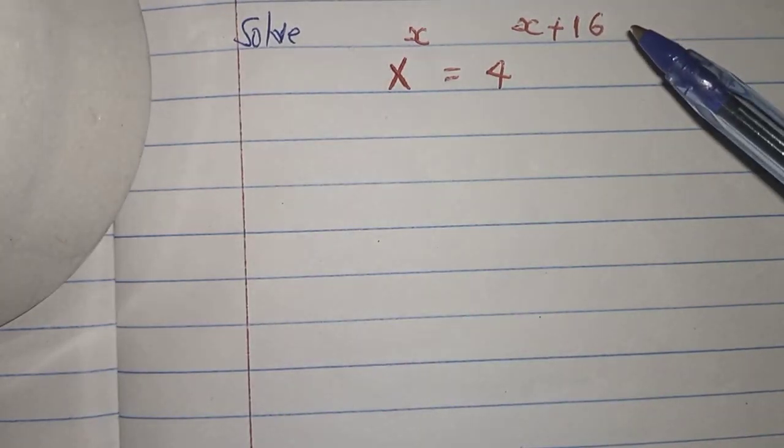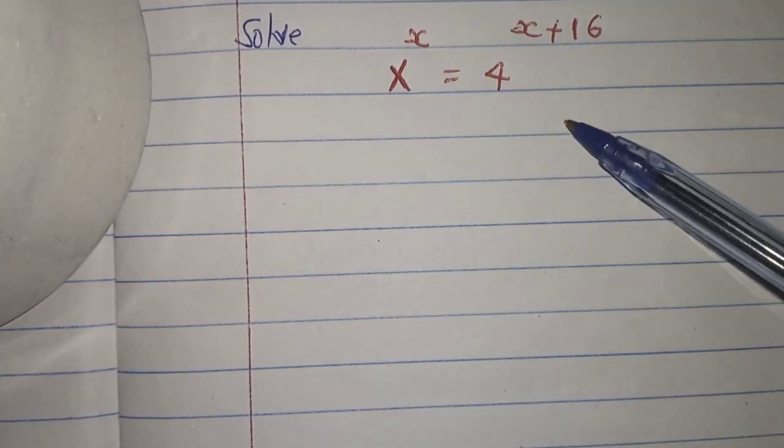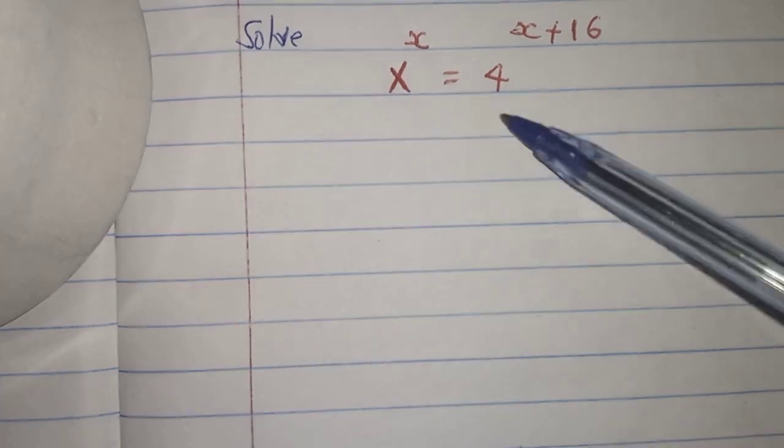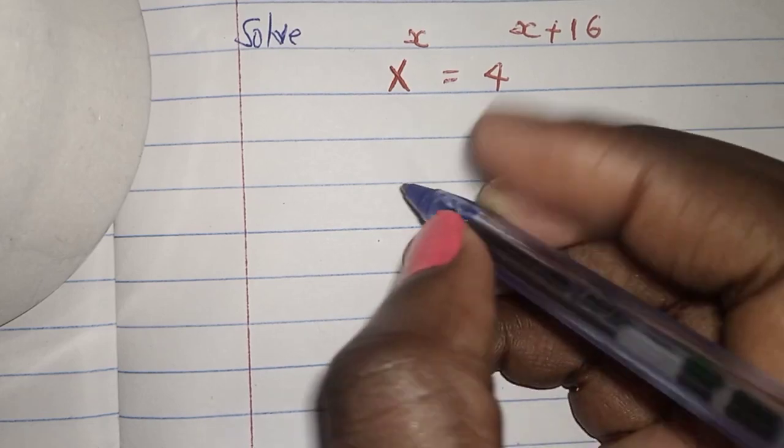So what we'll do, the first step, we'll check our bases are not the same on either sides. On this side I have x and on the other side I have x. So the first step, I will introduce logs on both sides.